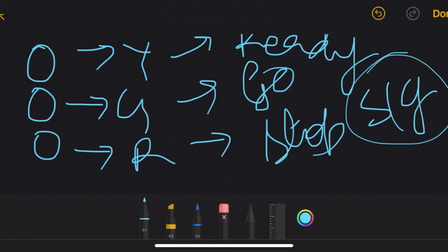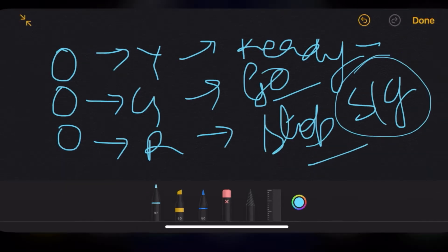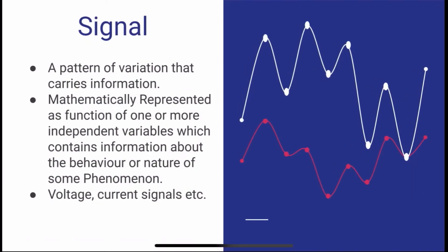These lights have some information about you should be ready to move. Similarly, your signal is also which contains some information with it. And mathematically it is represented as a function of one or more independent variables which contain information about the behavior or nature of some phenomena.